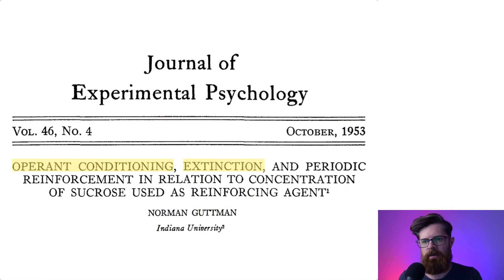In this video we're going to look at a study published in 1953 by Norman Gutmann. Quite a few things were reported in this paper, but the main things we're going to get out of it are operant conditioning and extinction. So I've highlighted operant conditioning and extinction.